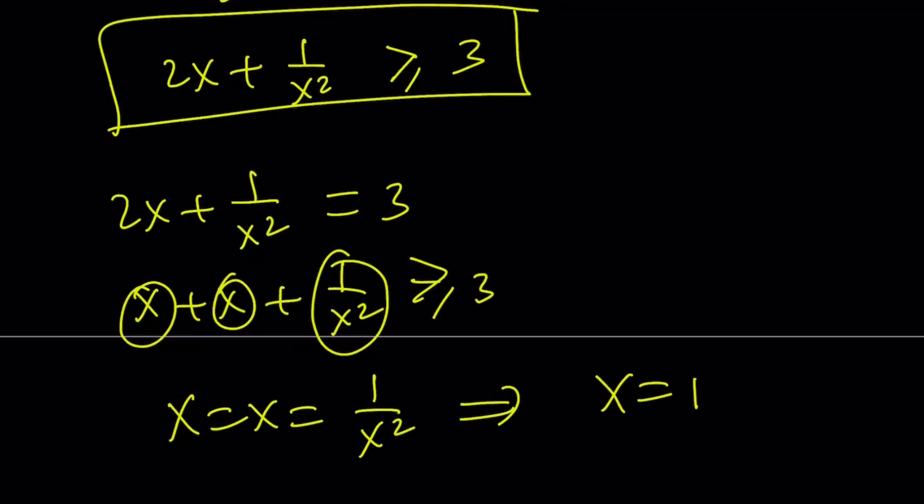So from here, x equals 1 is the only value that satisfies this inequality. Make sense? Because it has to take the minimum value.